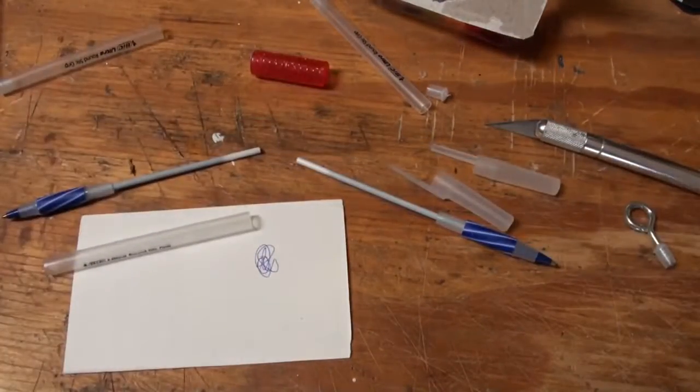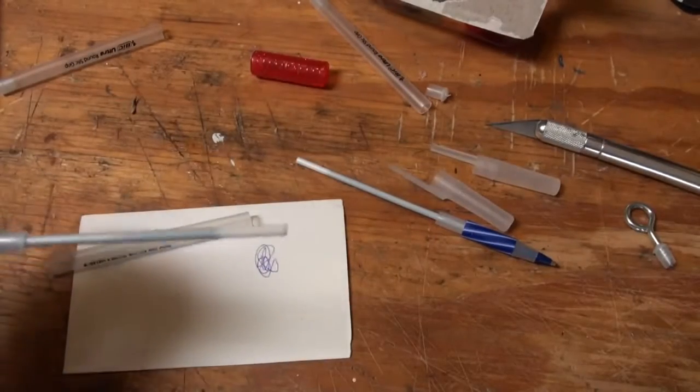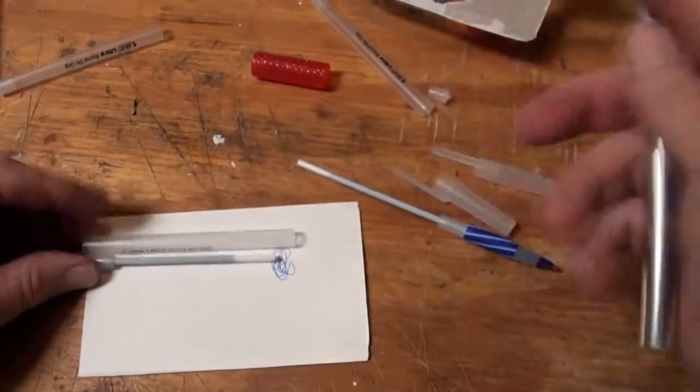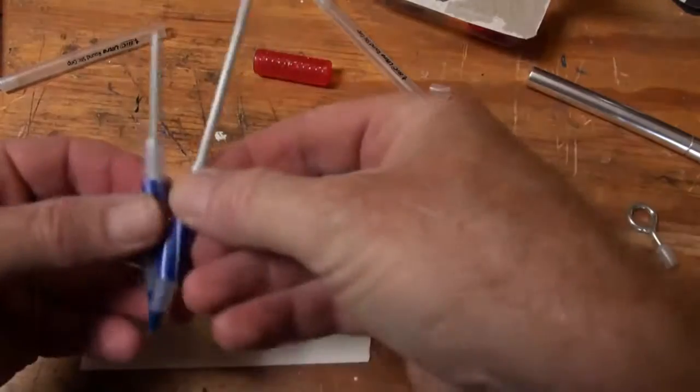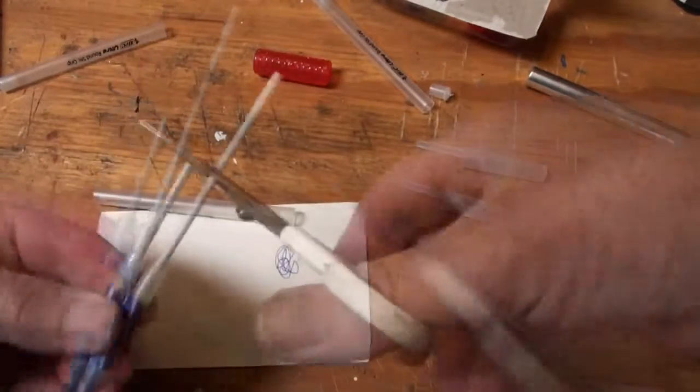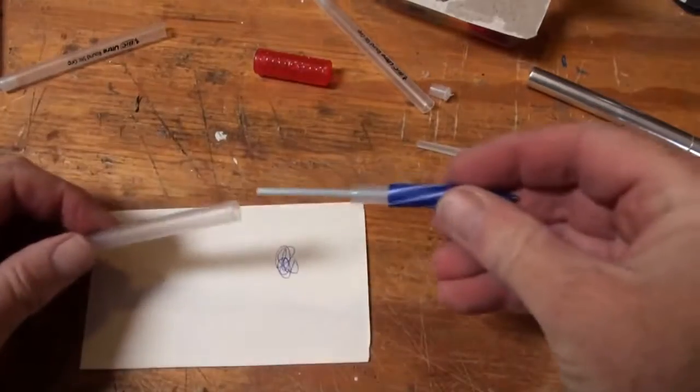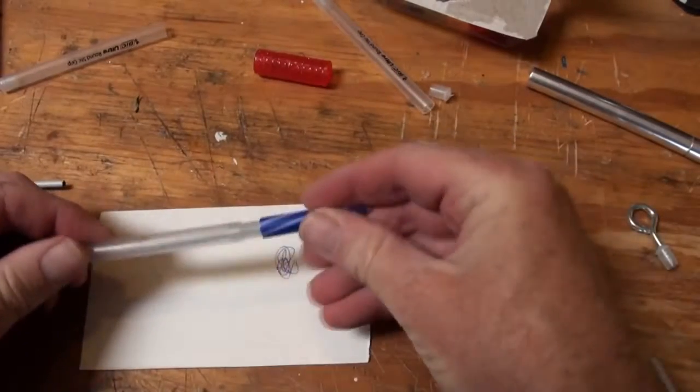The next thing, and this is the messy part, you've got to cut them short enough so that they'll fit. Measure it against the length of the barrel and cut. Do the next one. Fit the ends into the barrel.